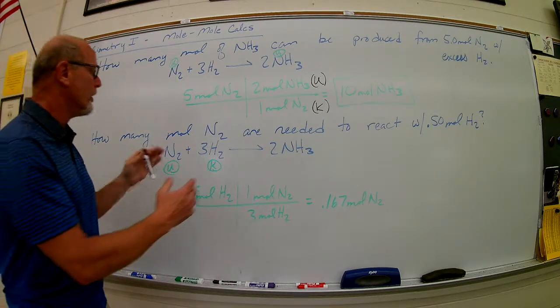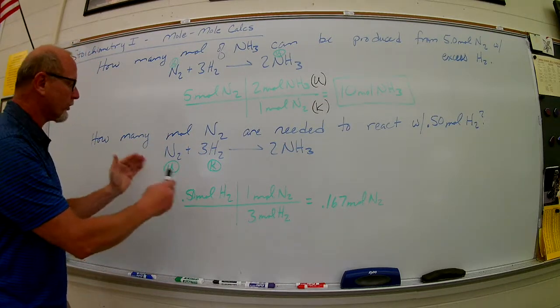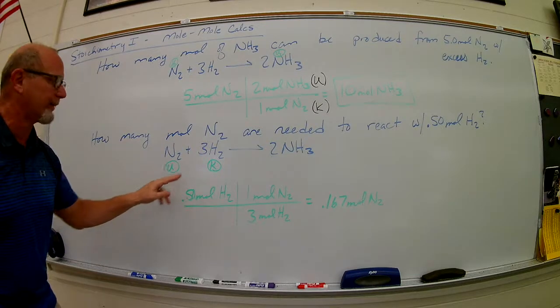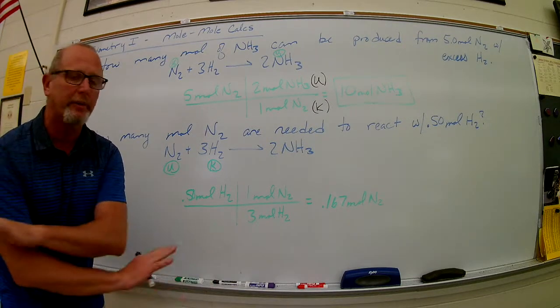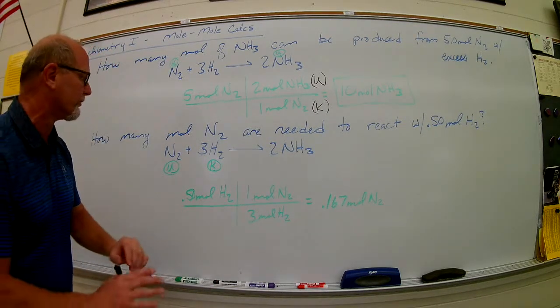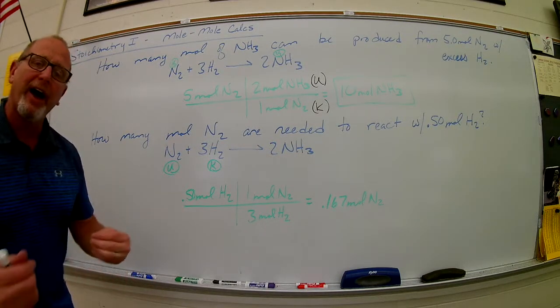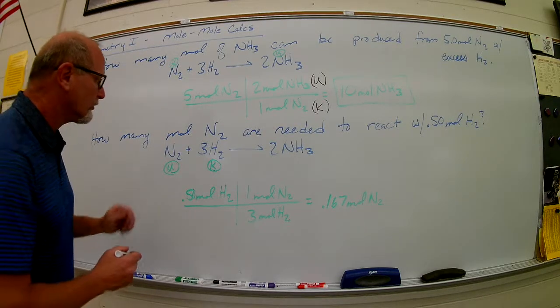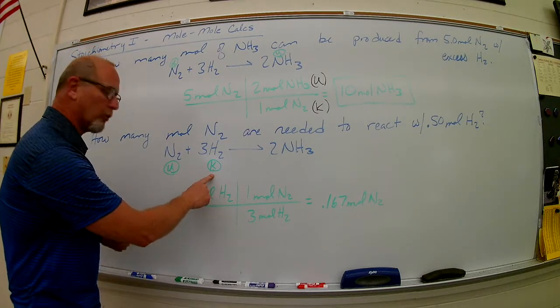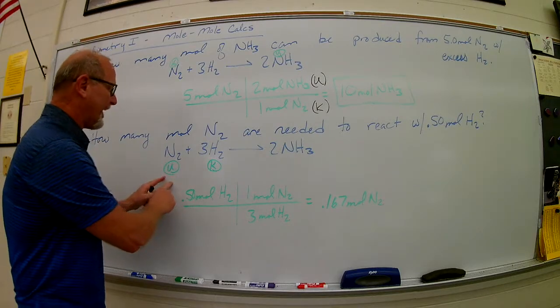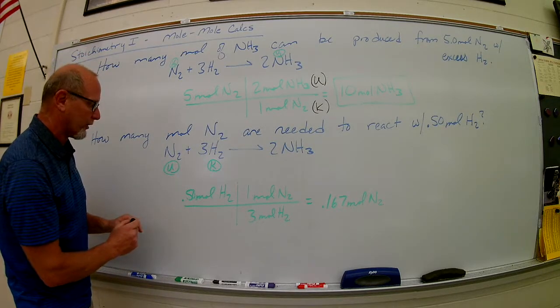Let's look at another one where now the known and the unknown are on the same side of the equation. The known and the unknown can be anywhere in the equation. It doesn't matter. We're still going to treat it the same. In this case, now we have 0.5, a half a mole of H2. So H2 has to be my known variable. How much N2 do I need to react with all of this?